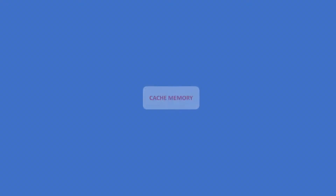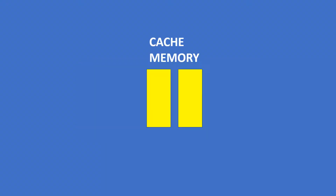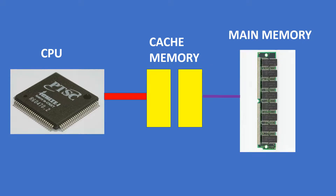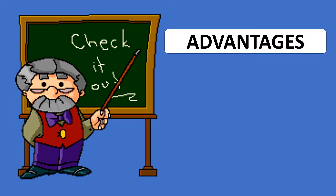Types of memory: Cache memory. Cache memory is a very high-speed semiconductor memory. It acts as a buffer between the CPU and main memory. It is used to hold data and programs which are most frequently used by the CPU.